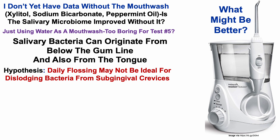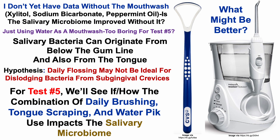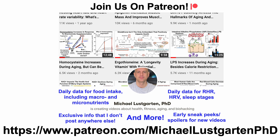Salivary bacteria can also originate from the tongue, so I also bought a tongue scraper — nothing fancy, just a simple one. For test number five, we'll see if the combination of daily tooth brushing, tongue scraping, and water pick use impacts the salivary microbiome. Stay tuned for that data in an upcoming video.